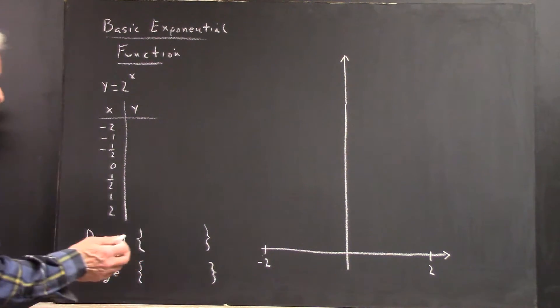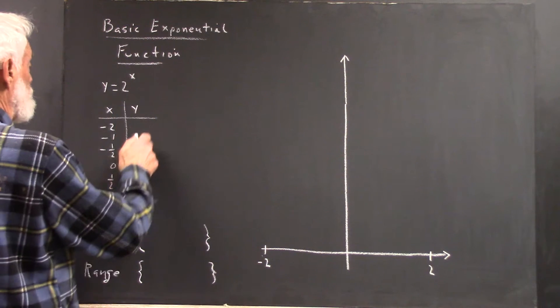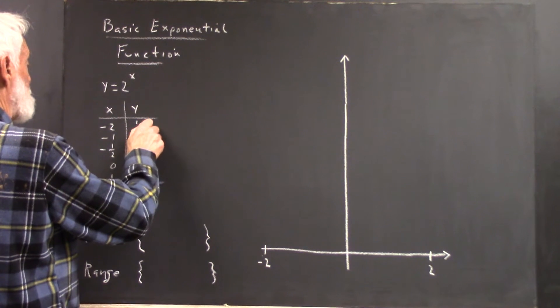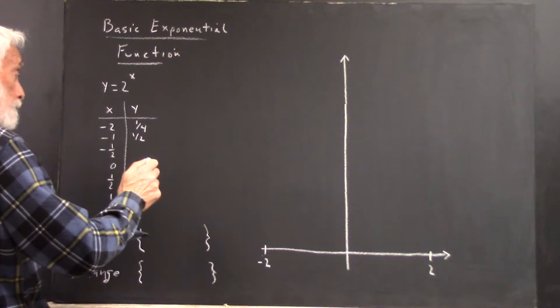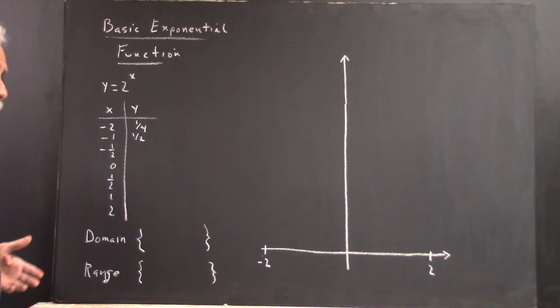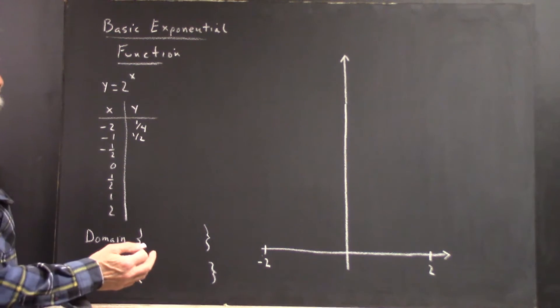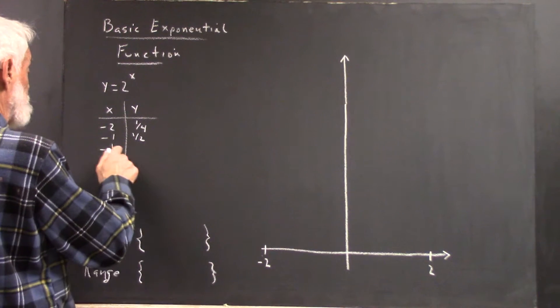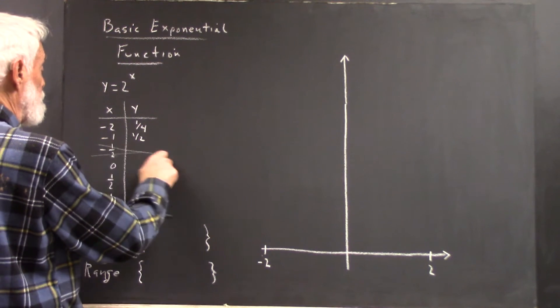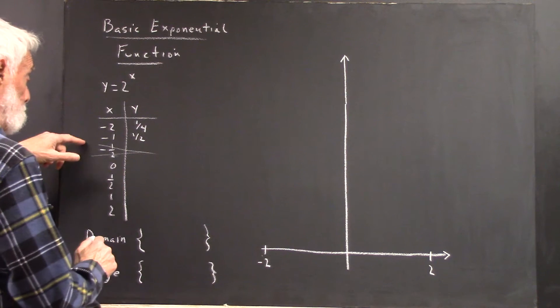When x is negative 2, y is 2 to the negative 2, which is 1 fourth. When x equals negative 1, y is 1 half. When x equals negative 1 half, you can't calculate it. You can use a calculator to approximate it, but we're not doing that. So that point is out of the domain.